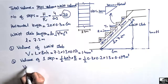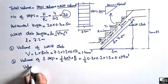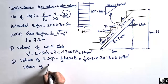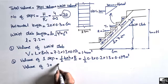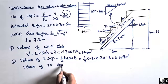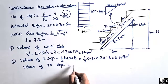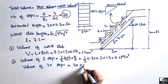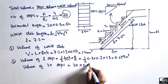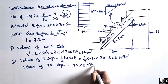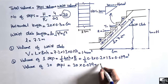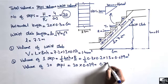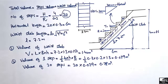We have 20 steps total, so the volume of 20 steps equals 20 multiplied by the volume of one step. That is 20 × 0.039 = 0.78 cubic meters.